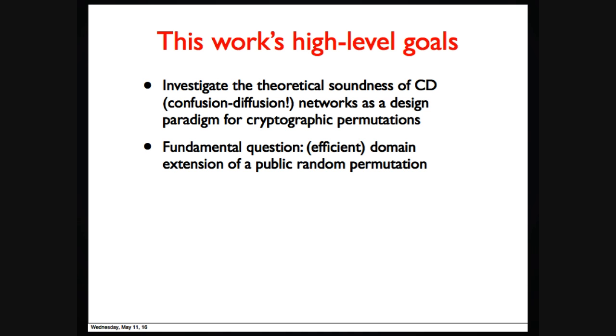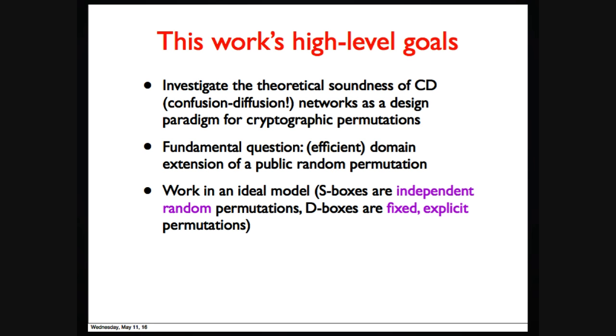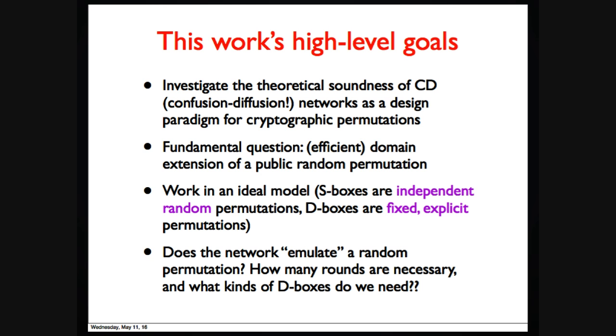In particular, the S-box would be modeled as a random permutation and a public random permutation. We want to construct a bigger random permutation. We would work in ideal model. Just one more time: S-box is random permutation oracle. All random S-boxes are independent. The D-box will be fixed, explicit, and hopefully a very simple permutation. Does this network simulate a random permutation? How many rounds do we need? What kind of diffusion box we need?